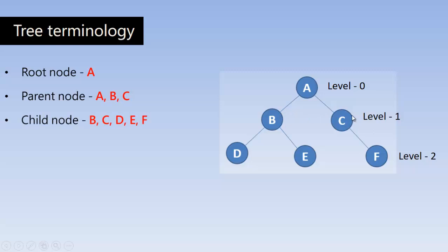Child node is a node which has a parent. Here B and C are the children of A, D and E are the children of B, F is the children of C. That means a child node has definitely got one parent.